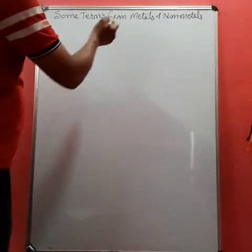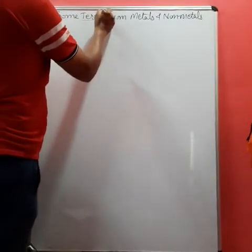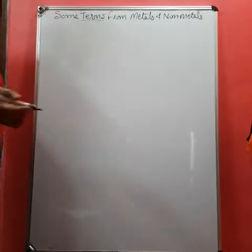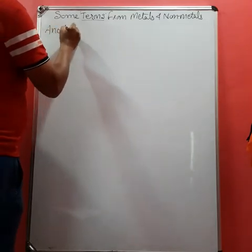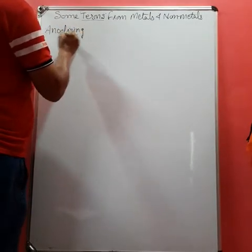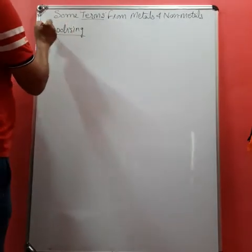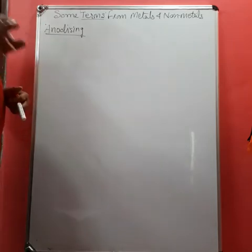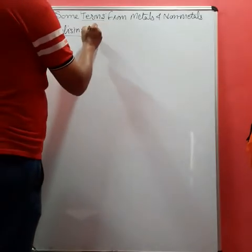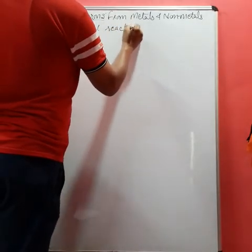Yes student, today I am giving you some definitions of some terms and their explanation. First one is anodizing. As the term suggests, anode, it is related to electrolysis. You know that aluminum reacts with O2.